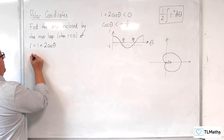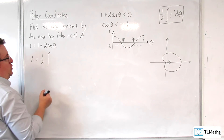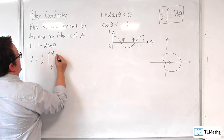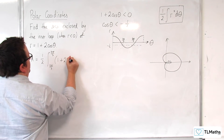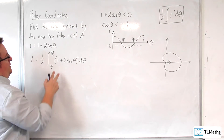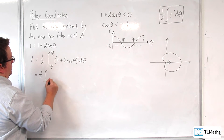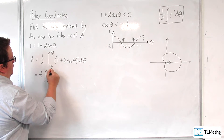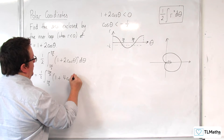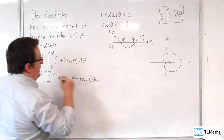So the area that we're interested in is going to be one half times the integral between 2π/3 and 4π/3 of r squared — so (1 plus 2 cosine theta) all squared dθ. Now I need to expand out that bracket: 1 plus 4 cosine theta plus 4 cosine squared theta dθ.